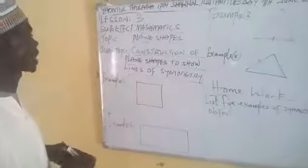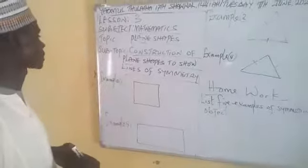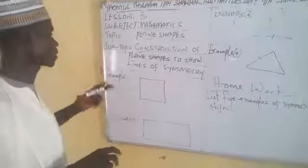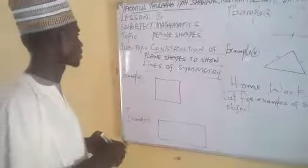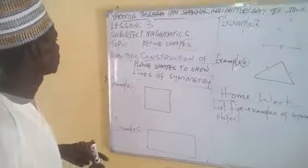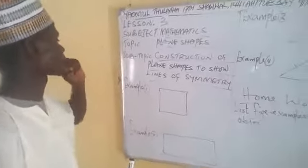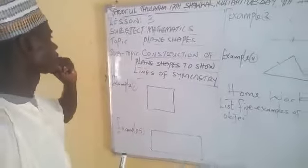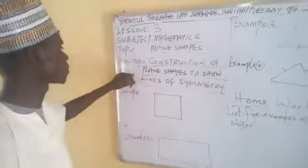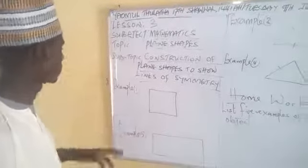In our last class we learned properties of plane shapes, specifically the properties of a square and a rectangle. Today we are going to look at the construction of plane shapes to show lines of symmetry.